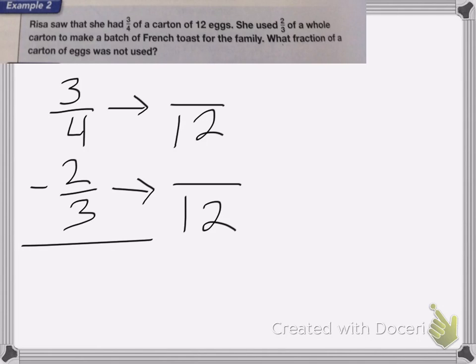Both 3 and 4 go into 12. So now I'm going to do, well, 4 times what is 12? 4 times 3 is 12. And whatever I do to the bottom, I do to the top. So 3 times 3 is 9.